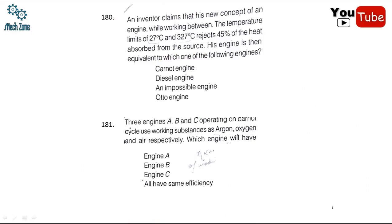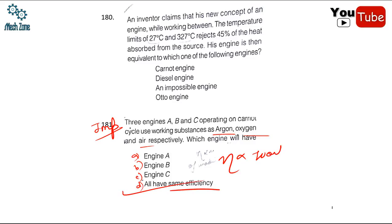Question 180: three engines A, B, and C operate on the Carnot cycle using working substances argon, oxygen, and air respectively. Which will have higher efficiency? The correct answer is that all have the same efficiency, because the efficiency of a Carnot engine is independent of the working fluid. It depends only on the temperature limits.